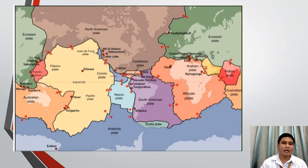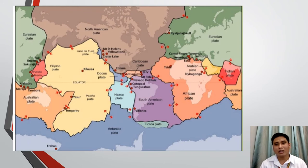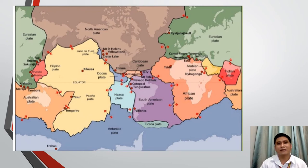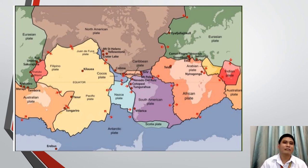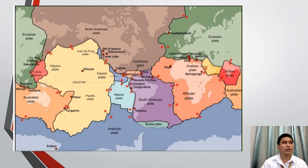Now, if we try to get a marking pen or a highlighter and draw lines between the patterns created by earthquakes, volcanoes, and mountain belts, we might come up with this kind of map — a map that shows us demarcation lines or boundaries between huge masses of land. And within these boundaries or lines, earthquakes, volcanic activities, and the creation of mountain ranges are happening.